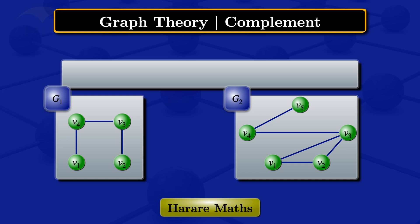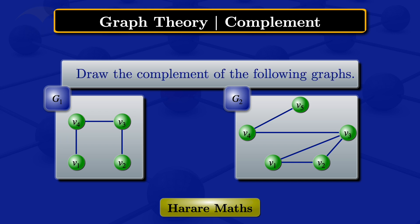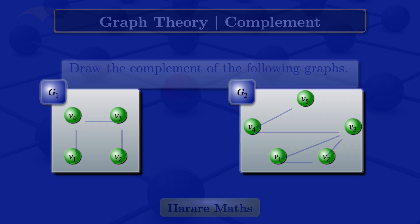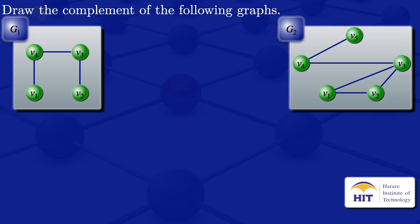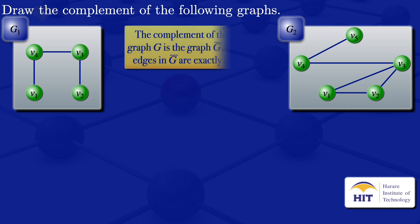In this video, I'm going to draw the complement of the graphs which are appearing on the screen. I will start by looking at what the complement of a simple graph is. The complement of a simple graph G is the graph G complement, where edges in G complement are edges that are not in the graph G.